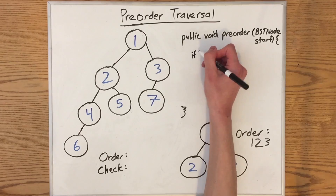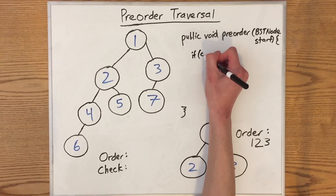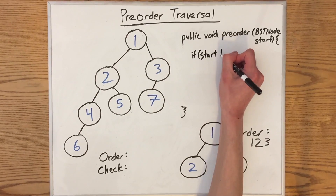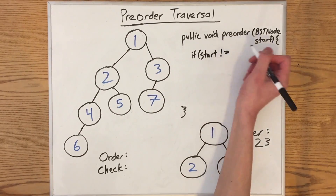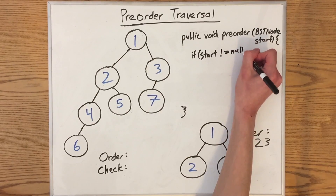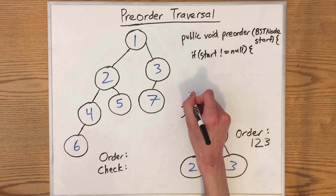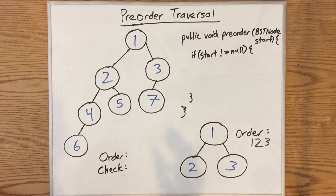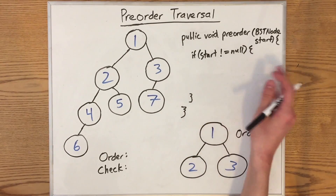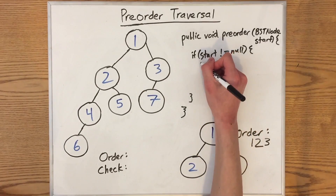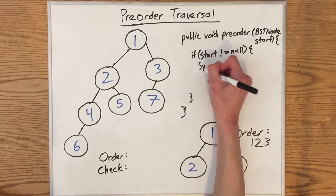So when we start our method, we know that the first thing that we've got to do is check if that is equal to null. We have to check, see if it's equal to null. We can proceed if it is not equal to null. So we know down here, when we're given this tree, the first thing we do is print out its root value.